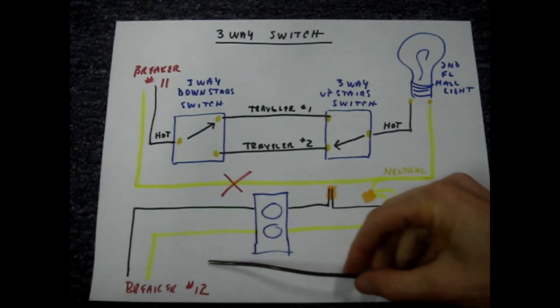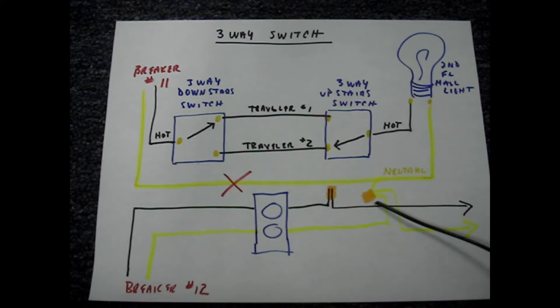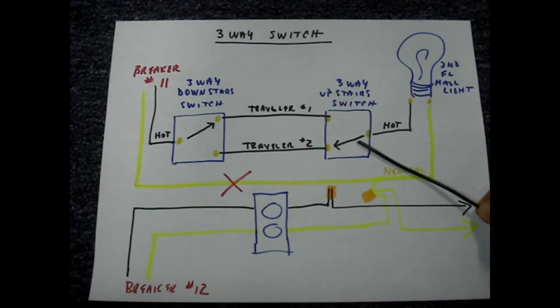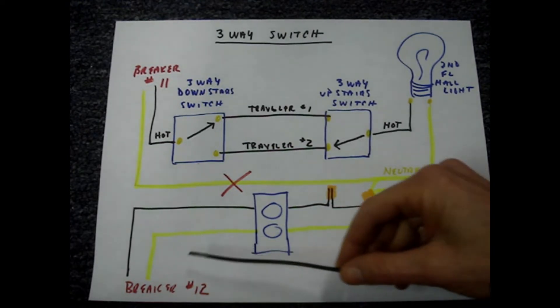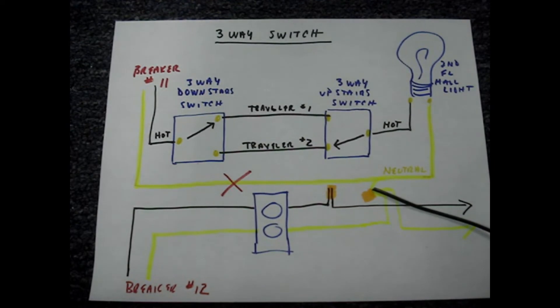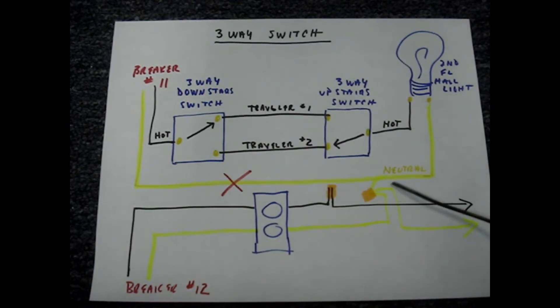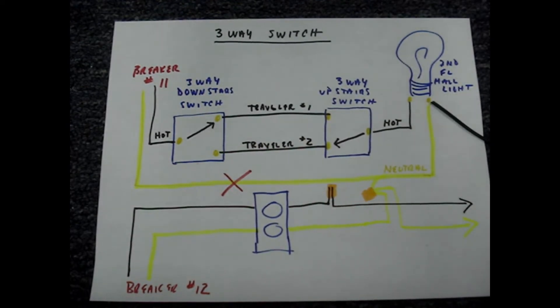The circuit connected to breaker 12 that services the second floor was just a few feet away from the switch box containing the upstairs switch, and what was done is the neutral wire connected to breaker 12 was connected to the second floor hallway light.